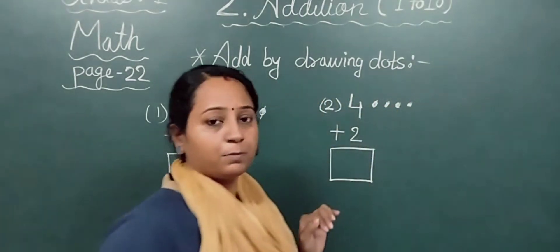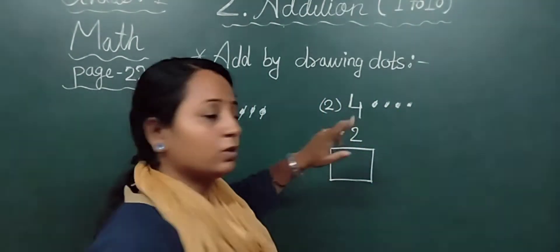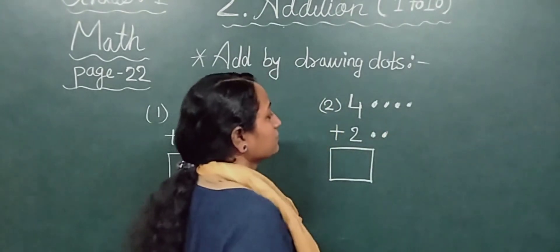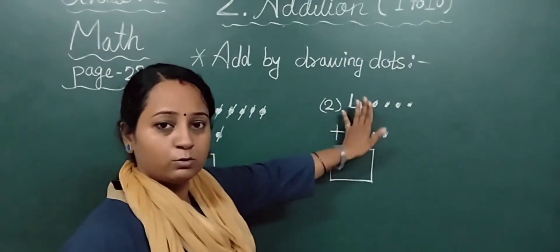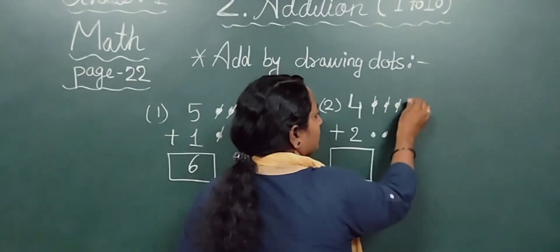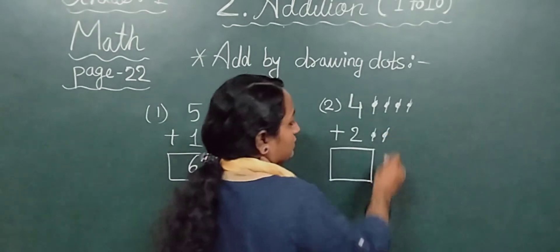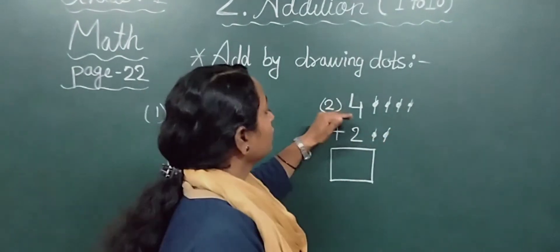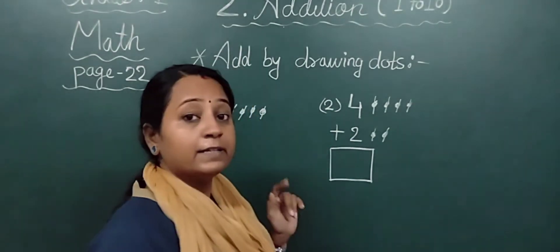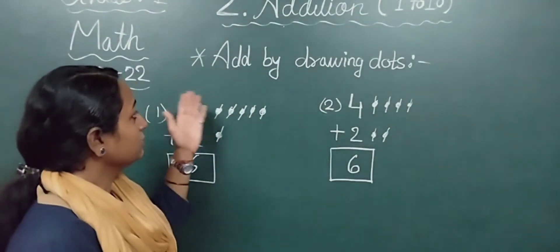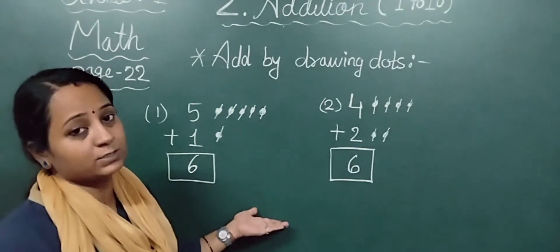We made 4 dots here. Here what is written? 2 is written. So we will make 2 dots here. Then again we have to count all dots. 1, 2, 3, 4, 5, 6. Total how many dots did we make? We made 6. So 4 plus 2 equals how much? 6. So 6 is the answer. In this way you have to do this exercise in your textbook.